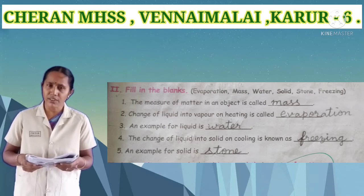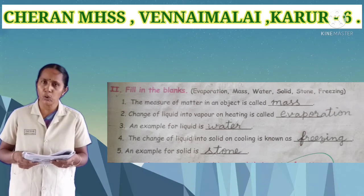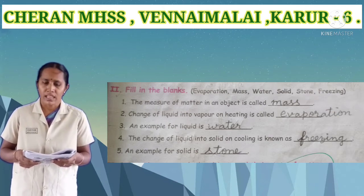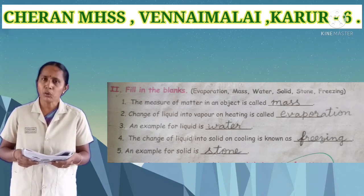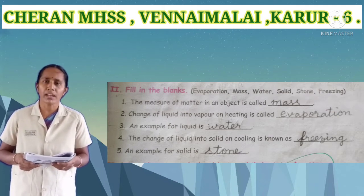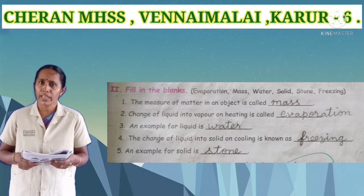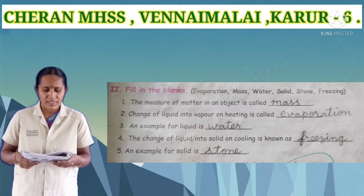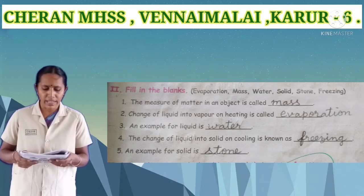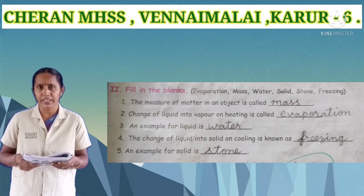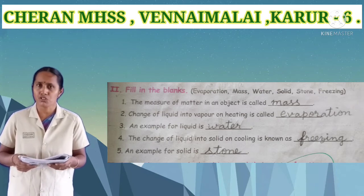Fourth one: the change of liquid into solid by cooling is known as blank. Answer: freezing. Fifth one: an example for solid is blank. Answer: stone.